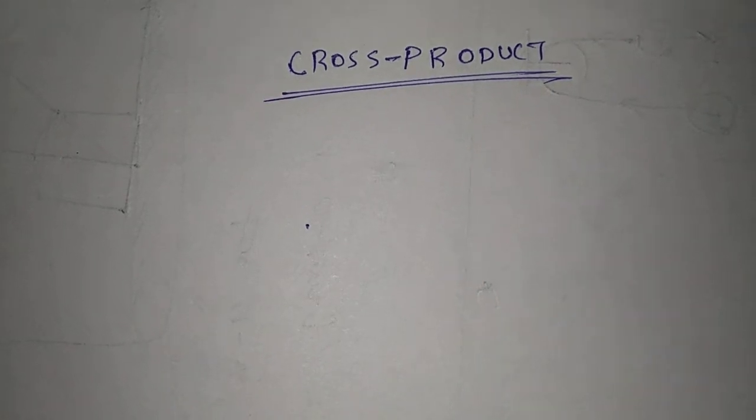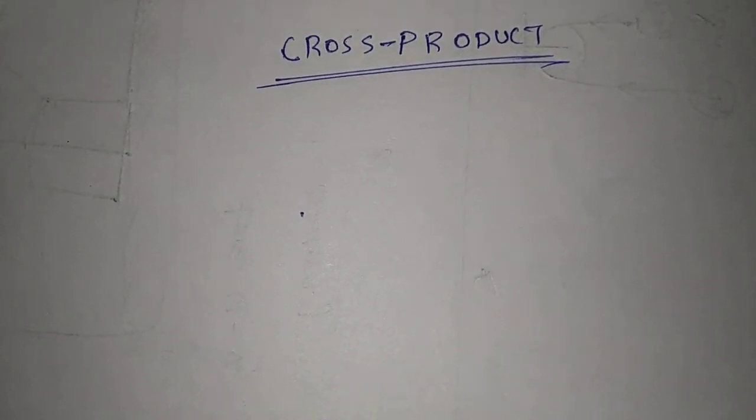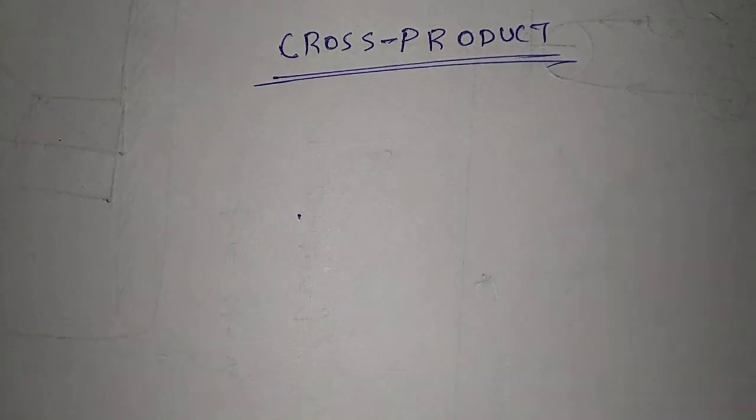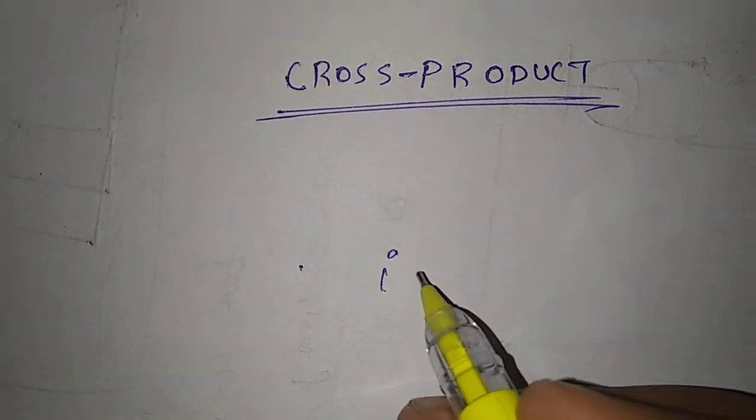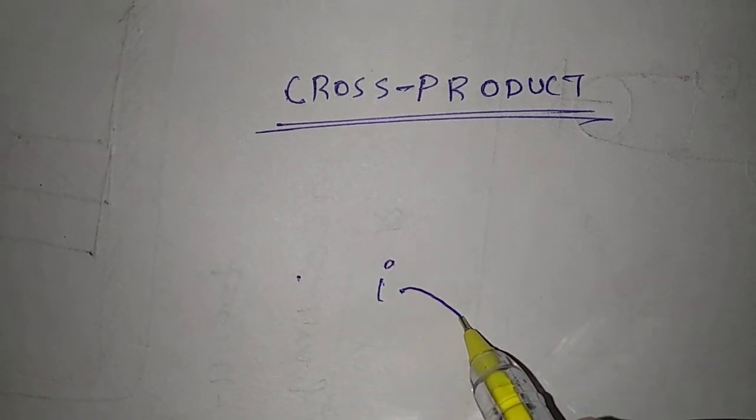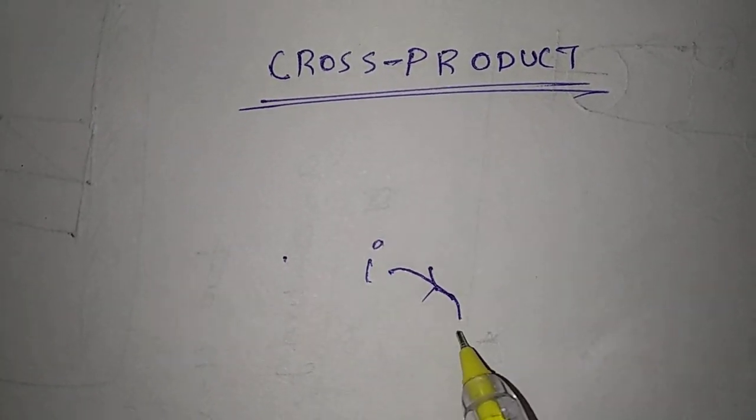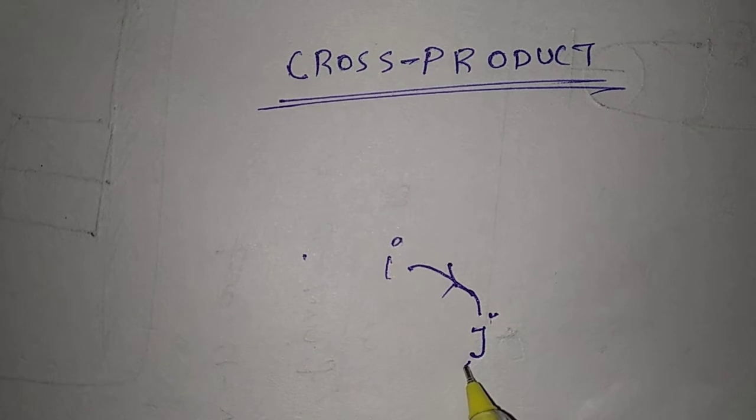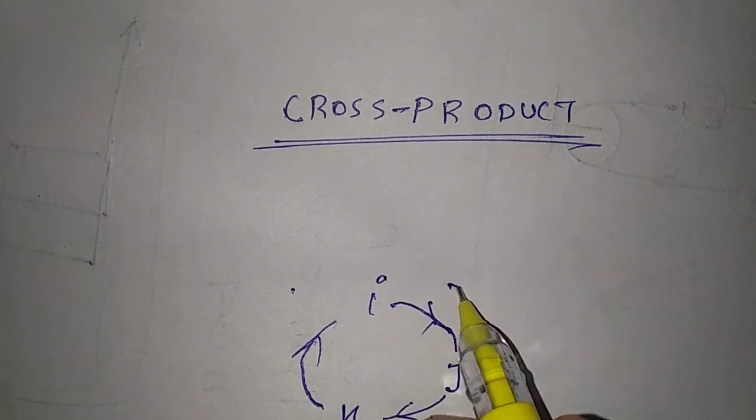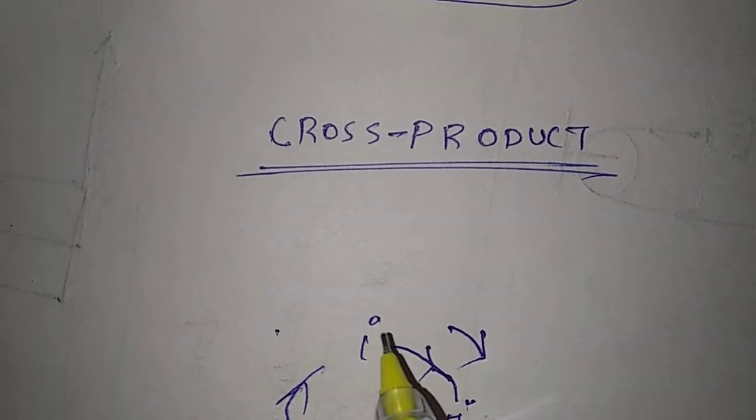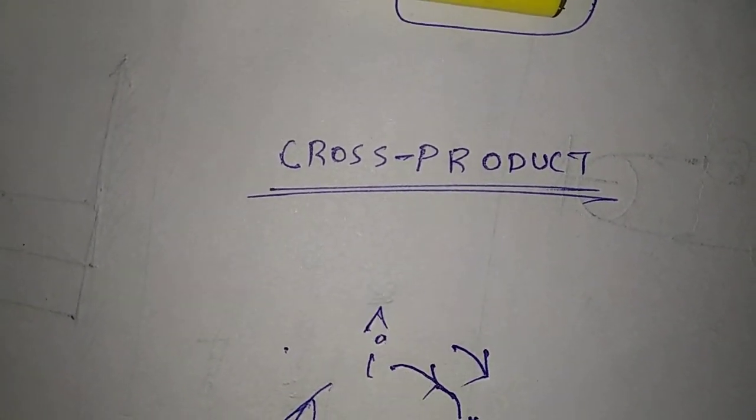Hello friends, today I'm going to tell you a very short trick to remember the cross product of unit vectors. First, draw a circle with I, J, K, I - such as here, three unit vectors.